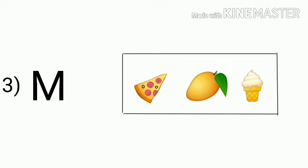Now let's see the next sound. It's M. And what all pictures are here? It's a picture of pizza, mango, and ice cream. Now which picture begins with the sound M? It's mango, so you will circle the mango.